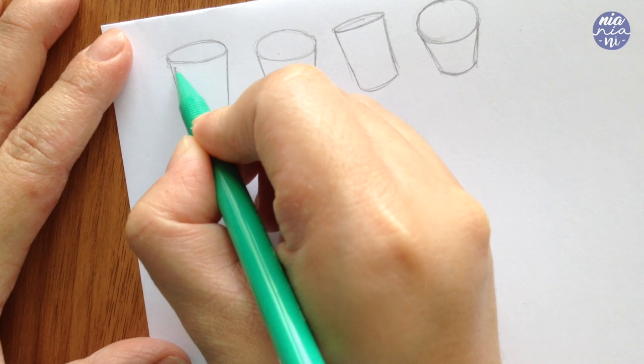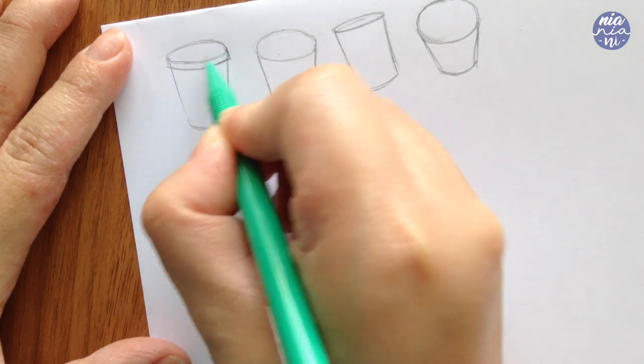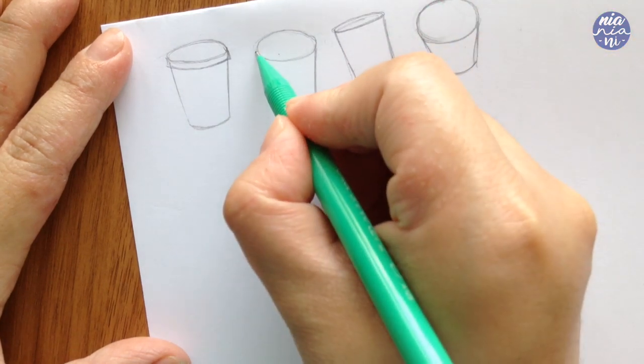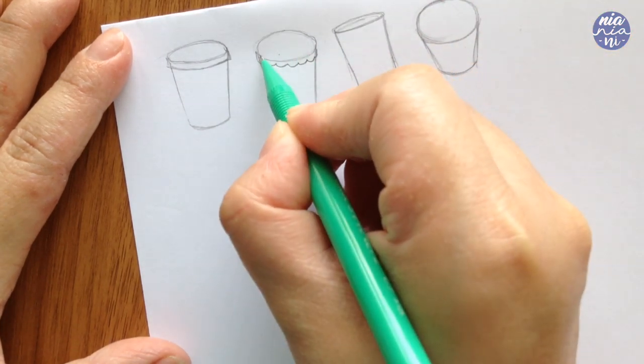If you want to make the lid for the cup, you can just double the line at the bottom of the oval or create some wavy or curvy lines, and make sure that the lid is slightly larger than the body of the cup.